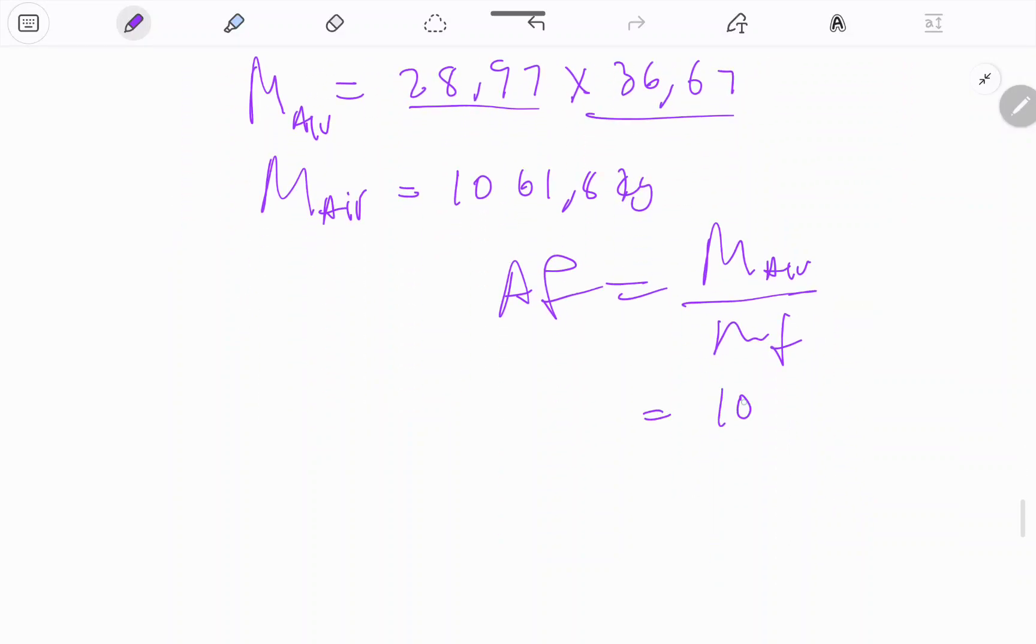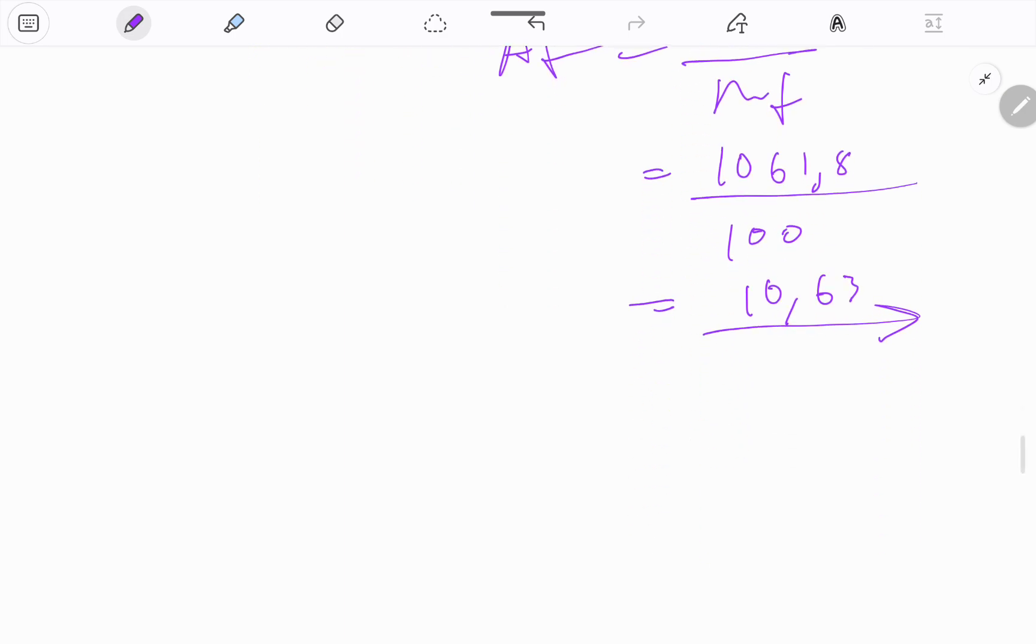If I compute, I'm getting 1061.8 kg. We're trying to find the air-fuel ratio, so mass of air over mass of fuel. Mass of air is 1061.8, mass of fuel is 100, then we're getting 10.63.